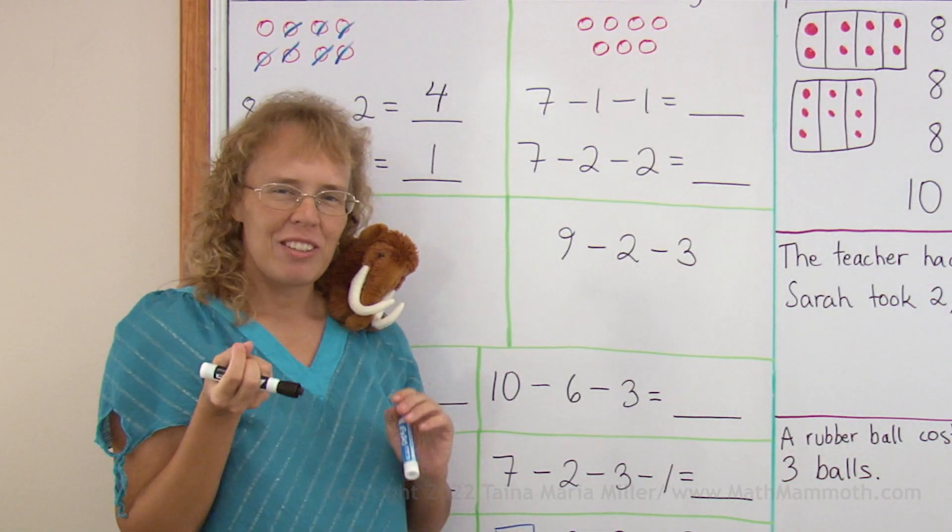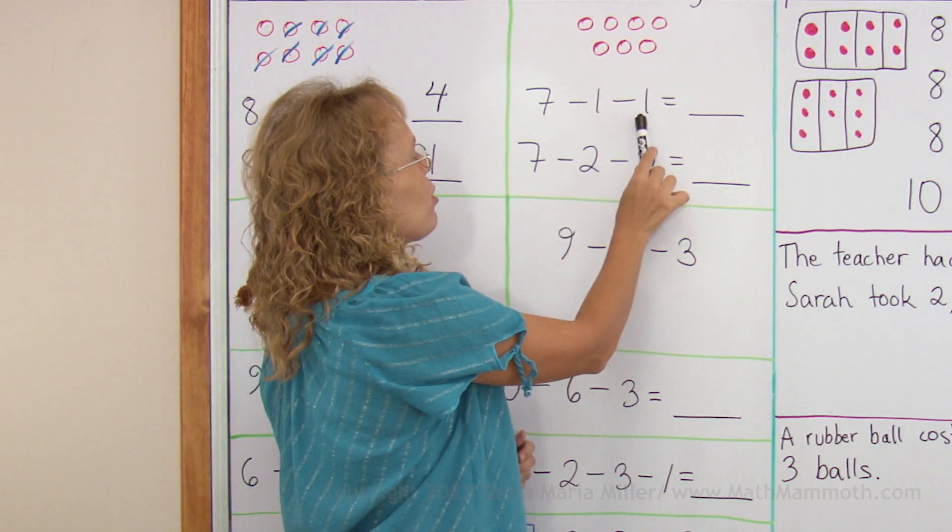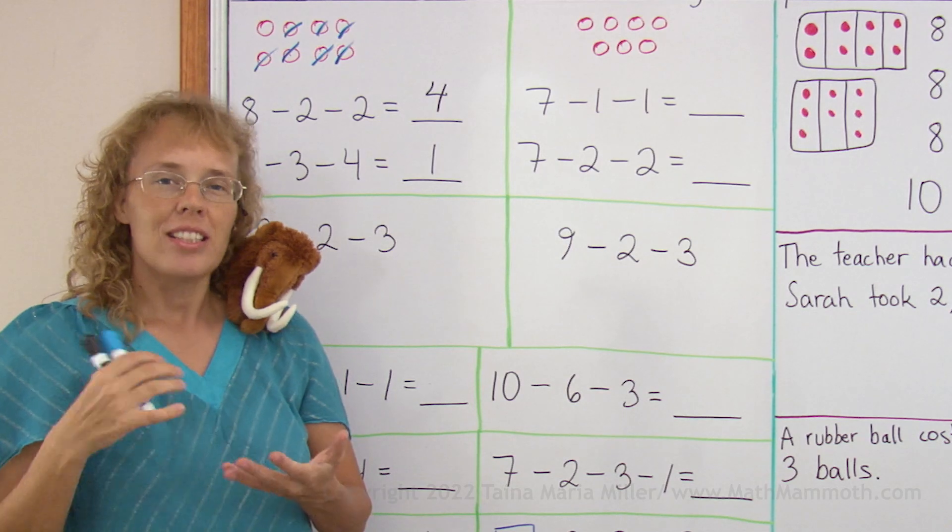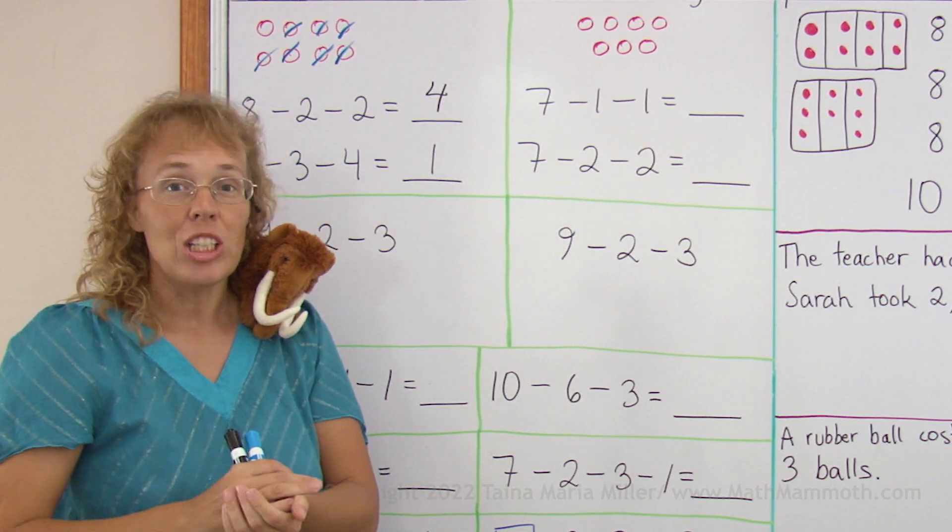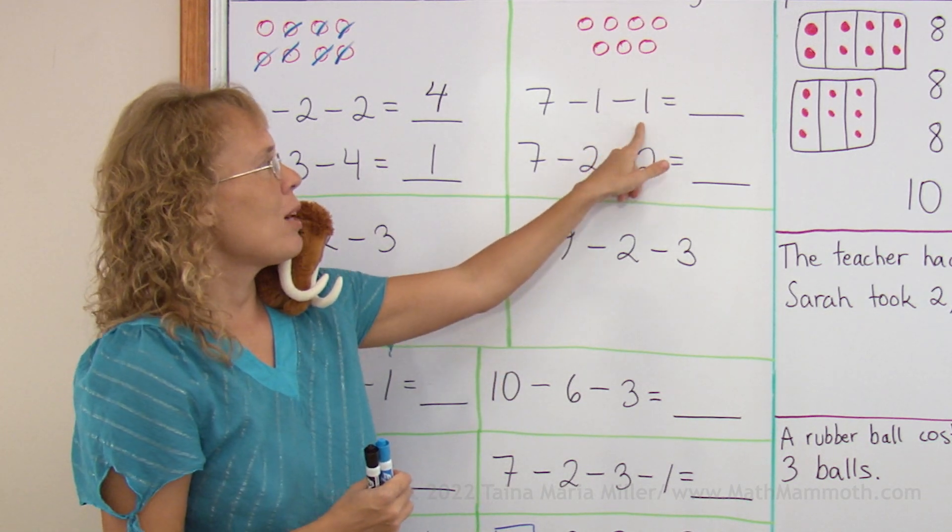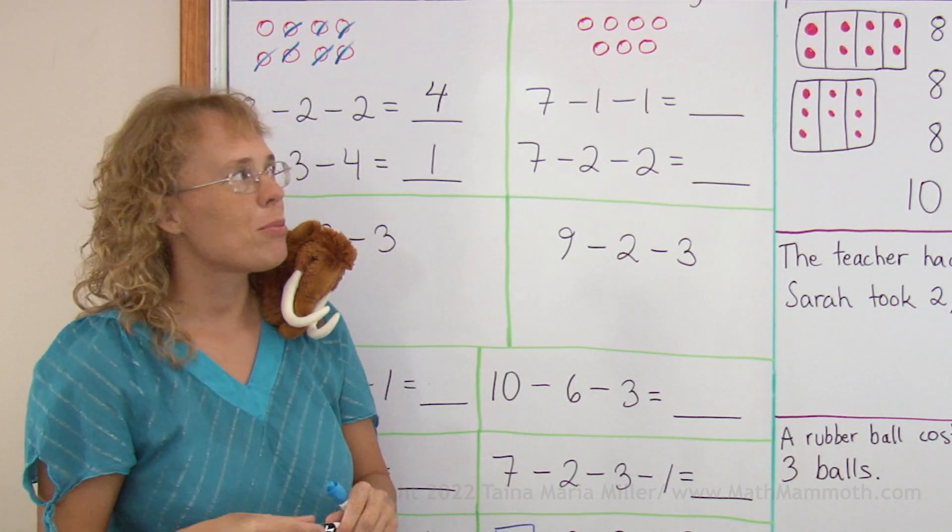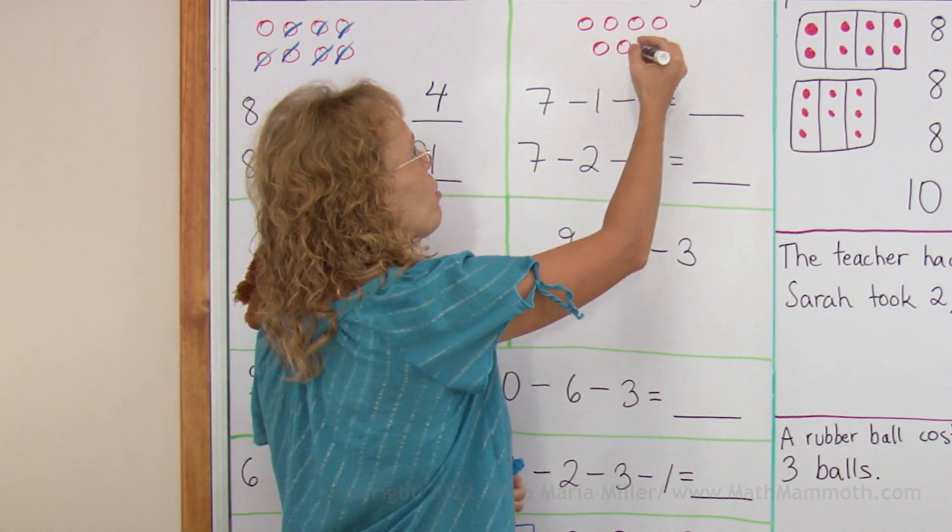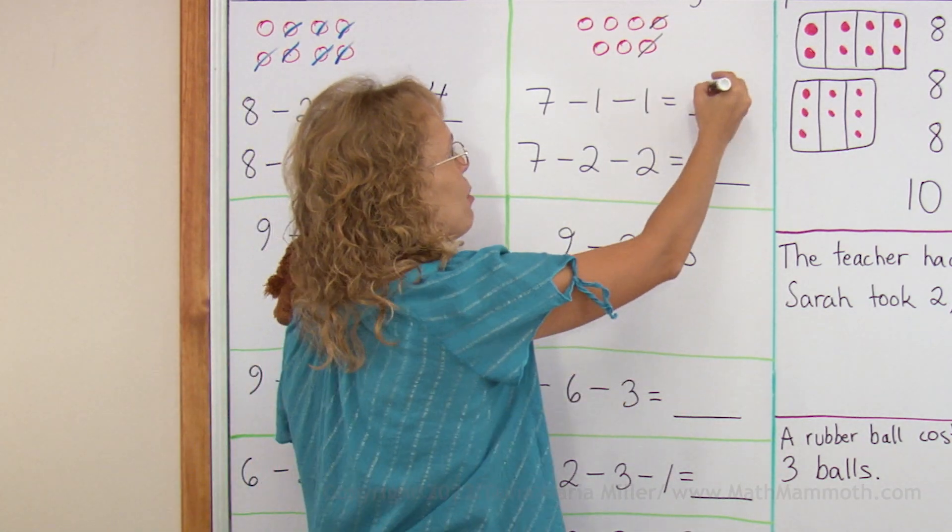Over here we're gonna solve it in a little bit different way. 7 minus 1 minus 1. I'm gonna think it this way, that I'm gonna subtract 1 and subtract 1, so I'm gonna subtract 2 in total. If 1 and 1 go away, a total of 2 will go away or be subtracted. So 2 will go away, those two. So it's 7 minus 2 equals 5.